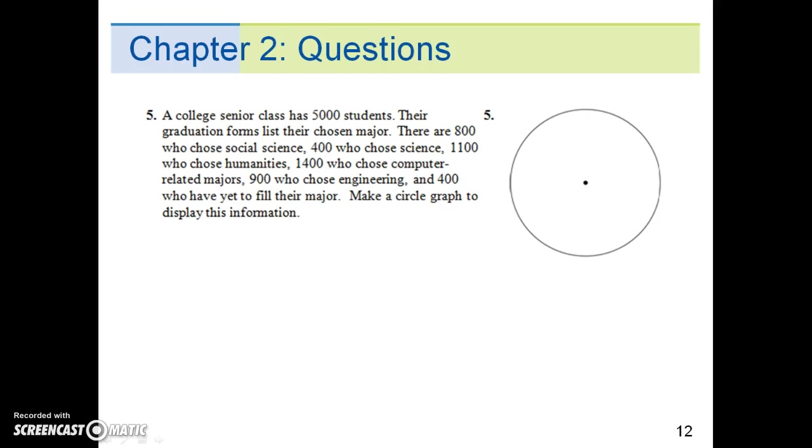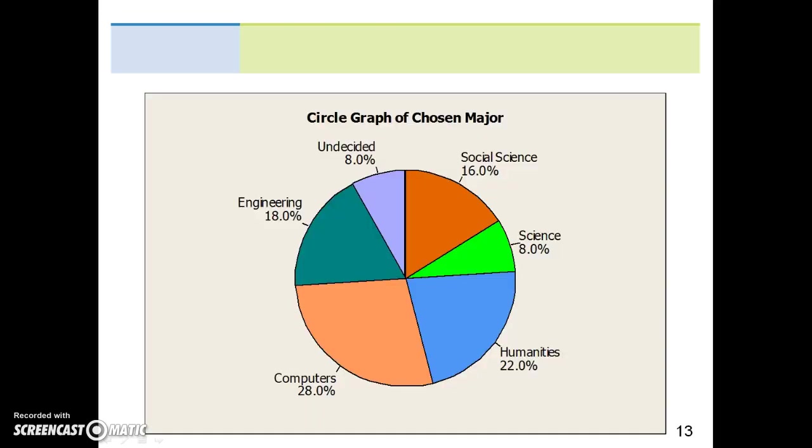First, try it on your own, then to verify the results, go to the next slide. This is what your results should look like, the circle graph of chosen major. Notice that the percentage is taken into consideration of the entire sample size of 5,000.